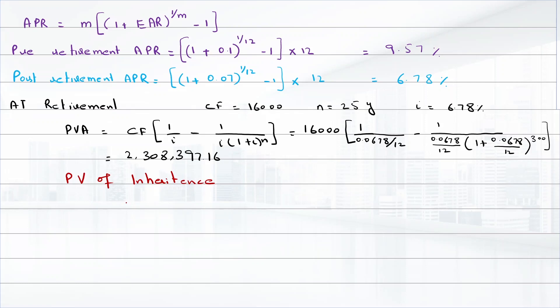At inheritance he is planning to give 1.5 million. N will be 25 years and interest rate will be 6.78%. So present value would be 1,500,000 divided by (1 + 0.0678/12) raised to power 300, which equals $276,373.77.